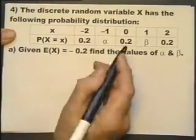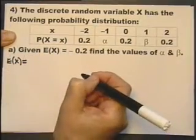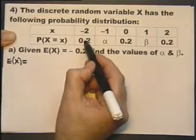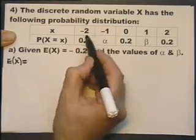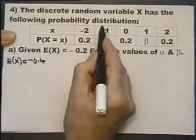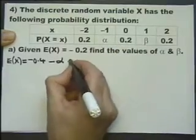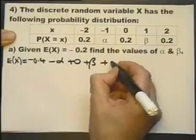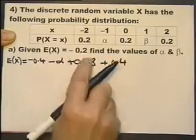Let's look at the expected value of X — in other words, the mean or average value. It's worked out by multiplying each value by its probability and summing them. So we get minus 0.4, plus minus alpha, plus 0 times its probability which is 0, plus beta, plus 0.4. This is how you work out the expected value.